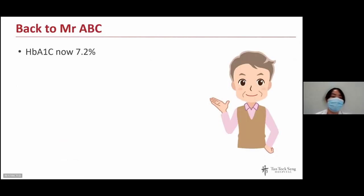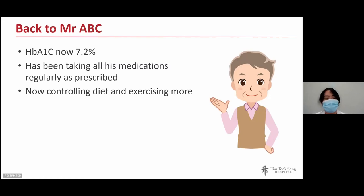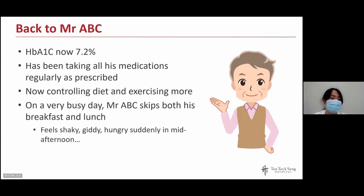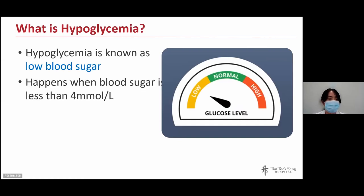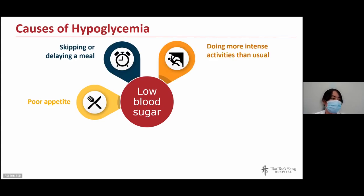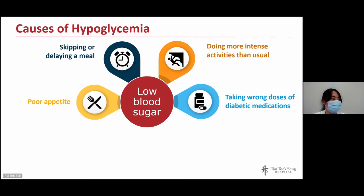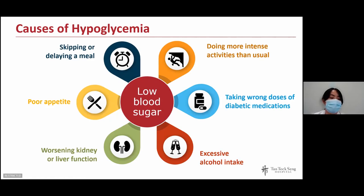After starting on insulin, Mr. ABC's HbA1c is now much better at 7.2%. He's been taking all medications regularly, controlling his diet more, and exercising more. On a really busy day, Mr. ABC skips both breakfast and lunch, and suddenly in the mid-afternoon he feels shaky, giddy, and hungry. These are symptoms of low blood sugar — hypoglycemia — which happens when blood sugar is less than 4 mmol/L. Causes of hypoglycemia include poor appetite, delaying or skipping a meal, more intense activity than usual, wrong doses of diabetic medications, excessive alcohol, or worsening kidney or liver function.